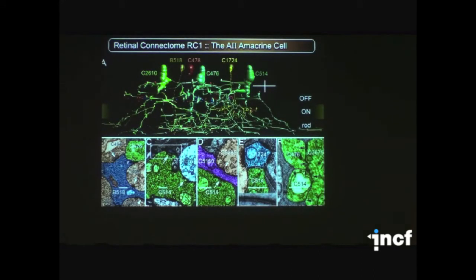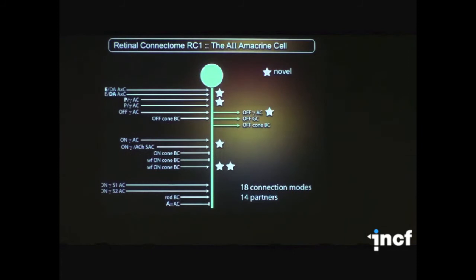So our first job was to mine this cell harder and find out what was going on. And I won't go through this image, but what we're able to do is find lots of partners to one cell and look at all the possible connections that those partners make. The summary for this cell is that before we started this project, we knew that these cells made connections with about seven other different kinds of cells. We now know that there are 14 different partners and that there are at least 18 different connection modes.